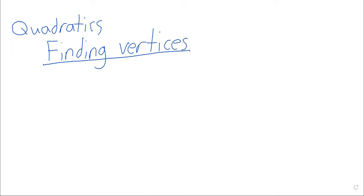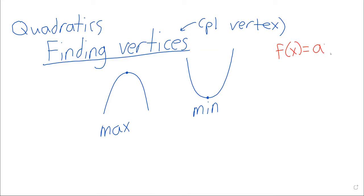I'm not sure if I've used that word before, so let's make sure we're all on the same page. A vertex, vertices is the plural, is the maximum value if the parabola is opening downwards, or its minimum value if it's opening upwards.